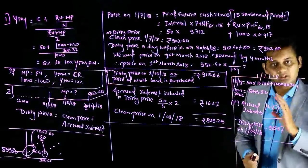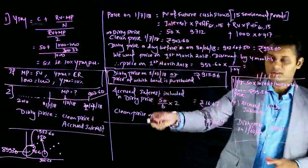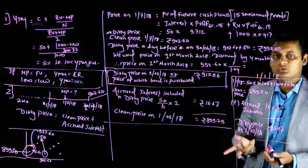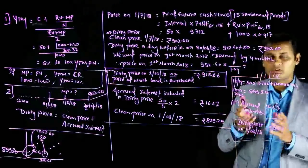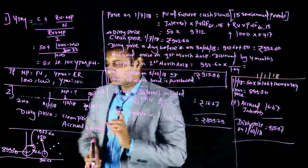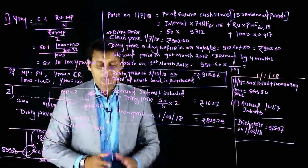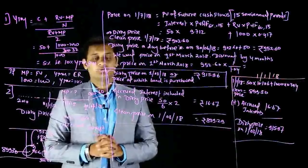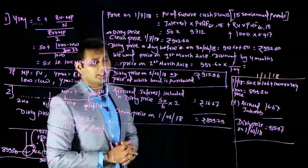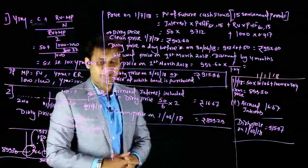Clean price on March 1, 2018 is approximately ₹899.29. So you now know the dirty price (₹915.96), the clean price (₹899.29), and the accrued interest (₹16.67). Both methods are valid; the first approach is more appropriate. This is the complete answer to this question. Write down the answers and we'll move to the next question.